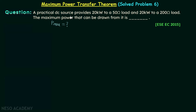After reading the question we can see that we have two cases. In case number 1, 20 kilowatts is supplied to a 50 ohms load. In case number 2, 20 kilowatts is supplied to a 200 ohms load. Recalling from the first lecture on maximum power transfer theorem, the maximum power equals Vth squared divided by 4 times Rth. So if we can calculate Vth and Rth we will have the maximum power.